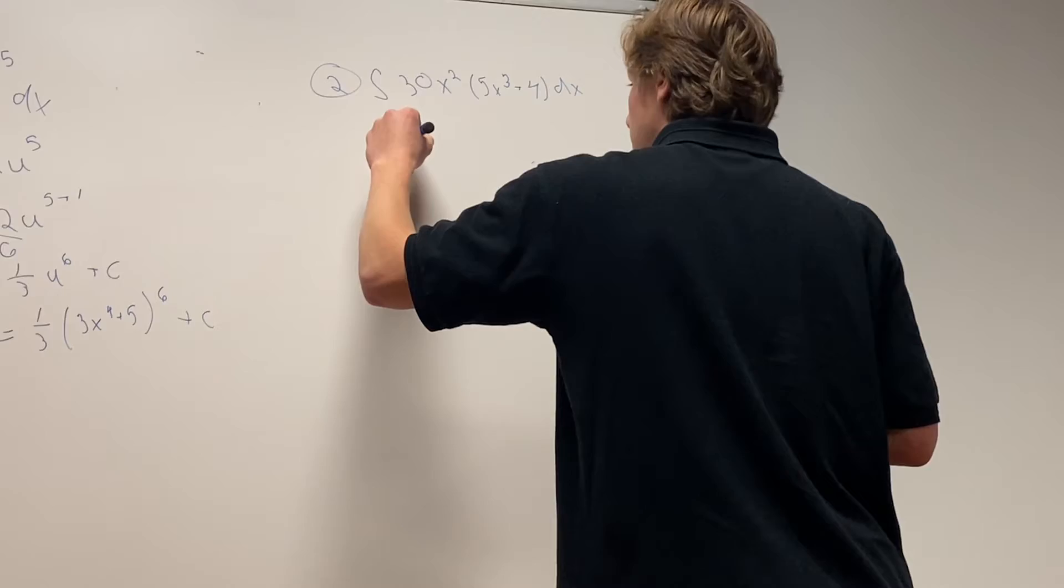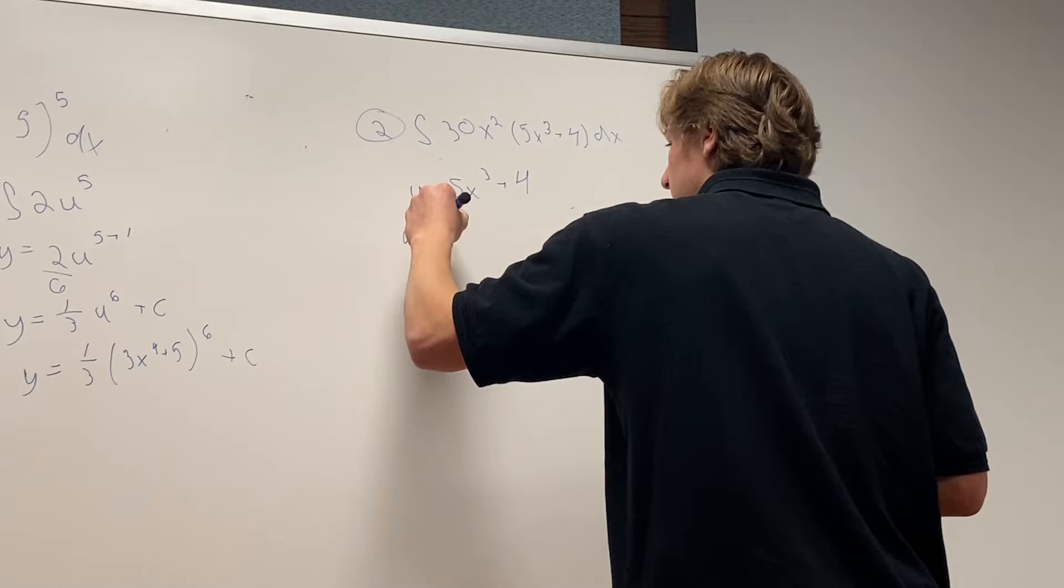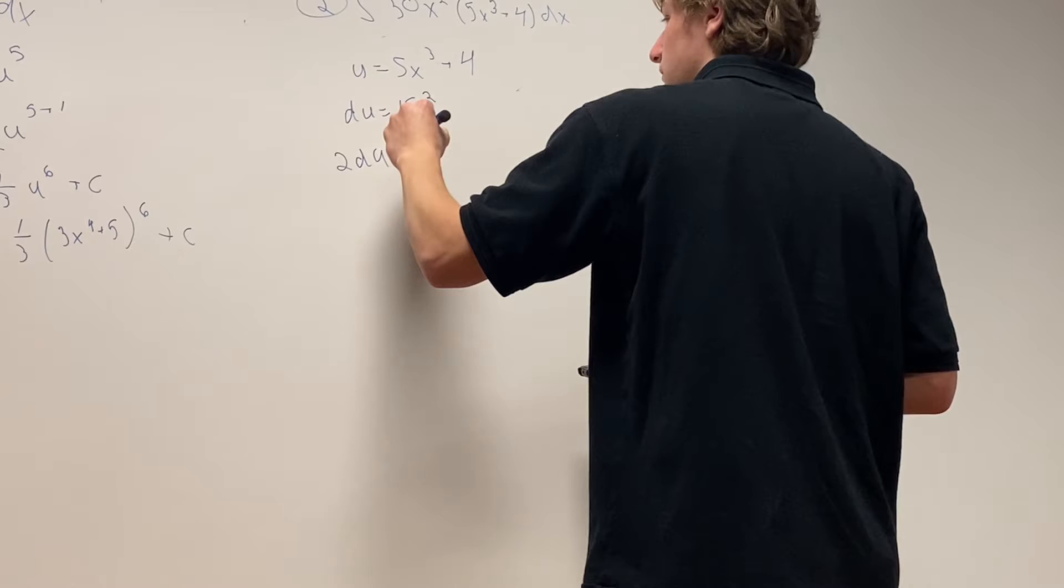And then derivative of u, so 5 times 3 equals 15x, and subtract 1 from the 3, so 15x squared. Derivative of 4 is 0, and then multiply to get your 30x squared.